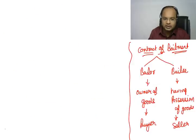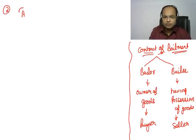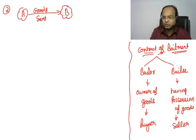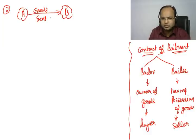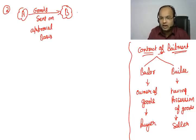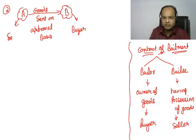Let me give you one more example. Suppose A sent some goods to B — there was no contract of sale yet. The goods were sent on an approval basis. Now it happened that B liked the goods and decided to buy them. So B became the buyer and A became the seller.